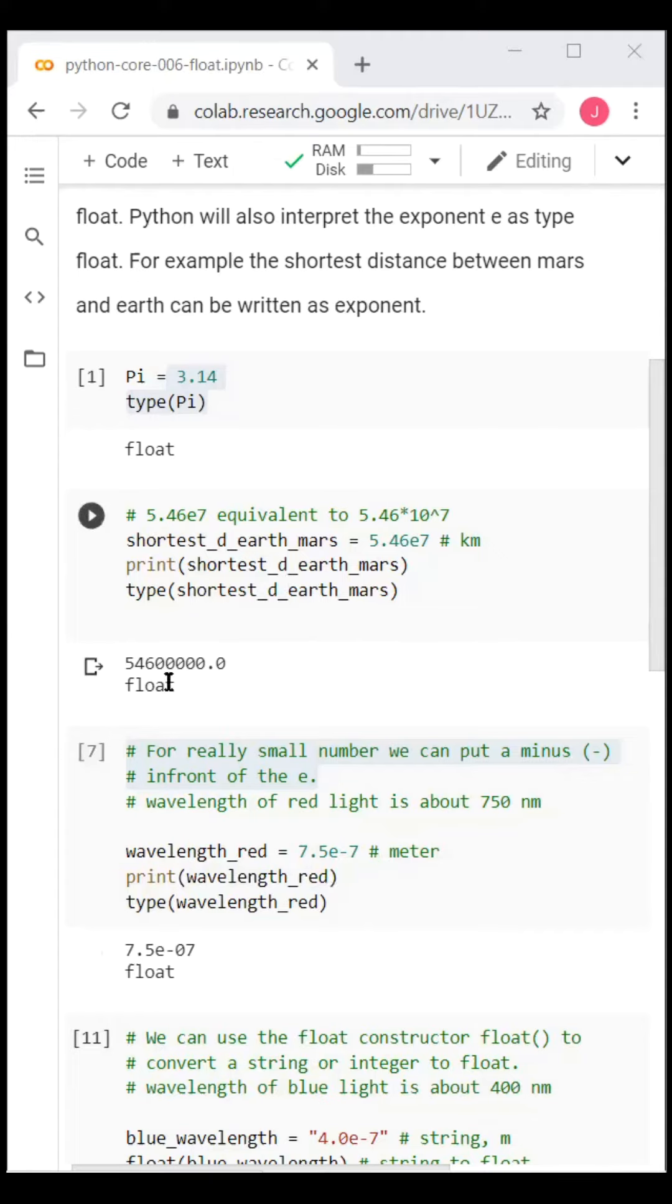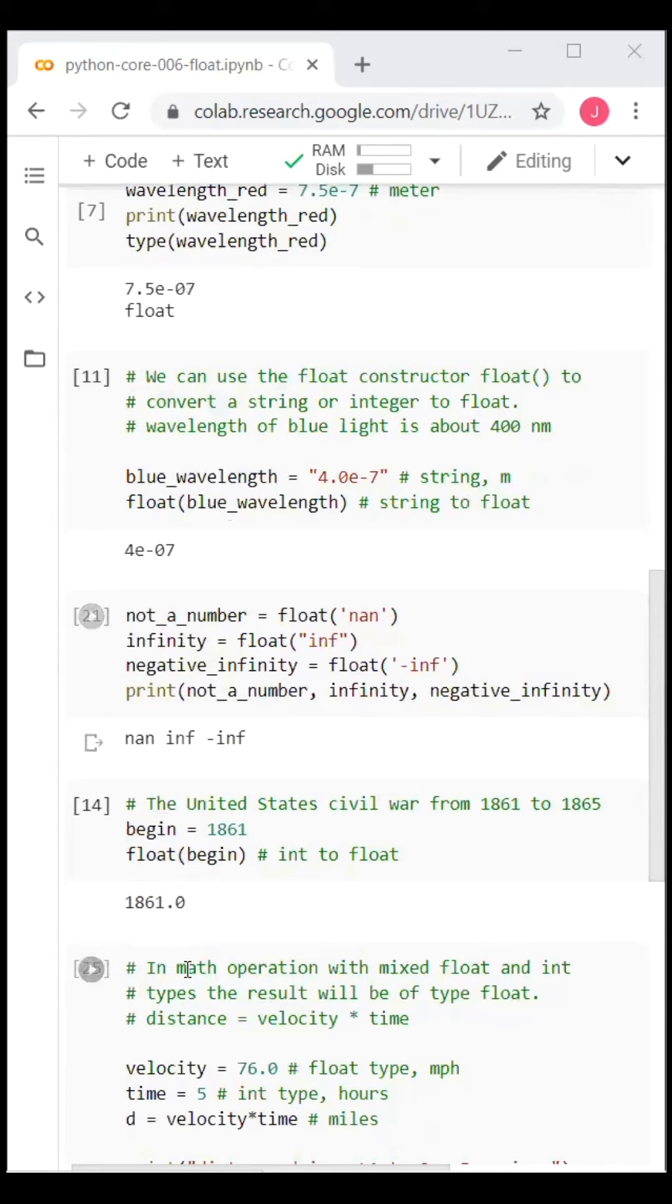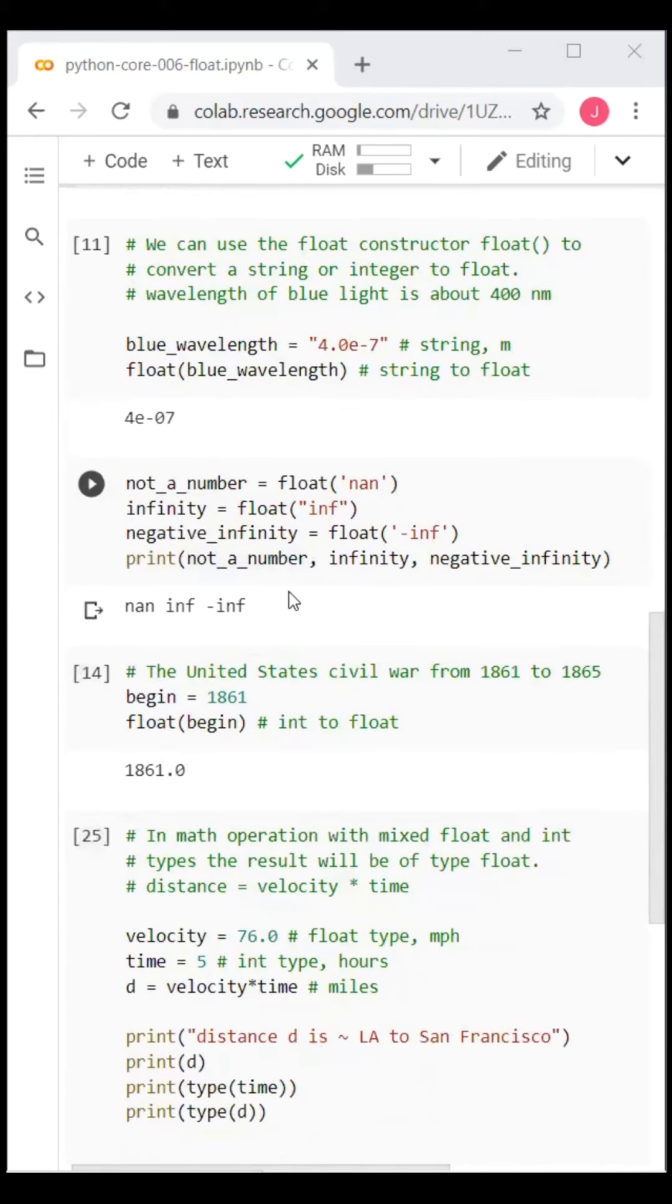Python automatically chooses the print output. We can use the float constructor to convert a string such as not a number and infinity or an integer to float.